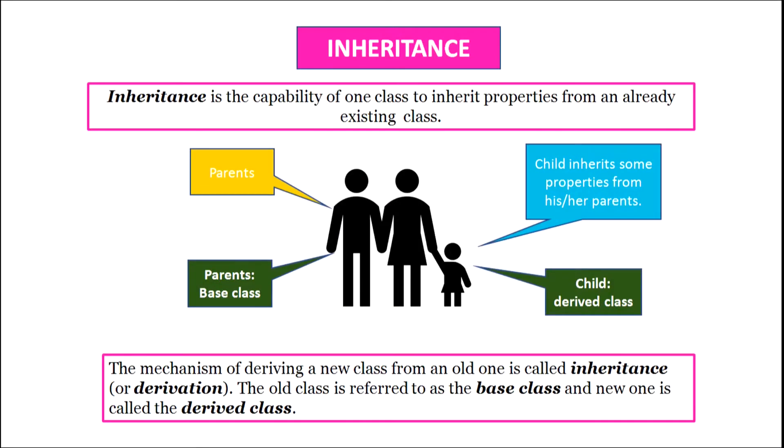All the properties of object-oriented programming are very close to real life. In real life, a child inherits properties from his or her parents. A similar feature has been introduced in object-oriented programming. Inheritance is defined as the capability of one class to inherit properties of an already existing class. The mechanism of deriving a new class from an old one is called inheritance or derivation. The old class is referred to as the base class and the new class is called the derived class.